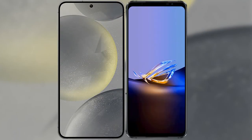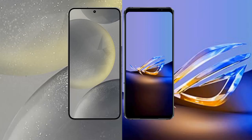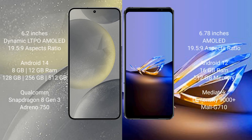We will compare the new Samsung Galaxy S24 with the ASUS ROG Phone 6D Ultimate. The Samsung Galaxy S24 comes with a 6.2-inch Dynamic LTPO AMOLED display and a 19.5:9 aspect ratio. The ASUS ROG Phone 6D Ultimate comes with a 6.78-inch AMOLED display and a 19.5:9 aspect ratio.